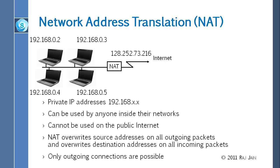At home, nobody has a public address. But at the university, we all have public addresses — when you log into wireless here, you get a 128.252 address, which is a public address. That is actually a luxury not available in many countries. Even WashU and other universities are increasingly switching to private addresses simply because public addresses are scarce. When you log in as a guest, you get 172.something or 10.something — both private addresses.